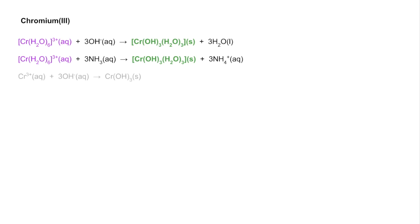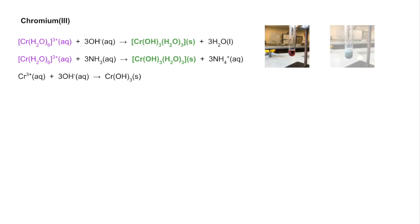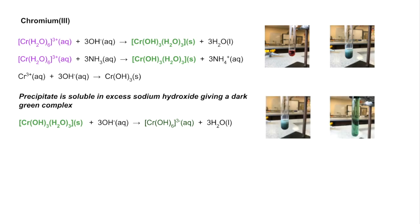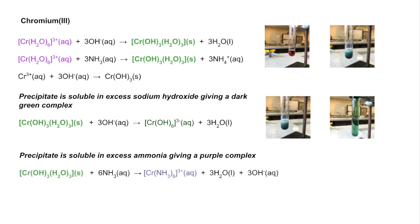Finally, for chromium 3+: the precipitation reaction gives a green or grey-green precipitate, starting from a violet solution. The precipitate is soluble in excess sodium hydroxide, giving a dark green complex, and also soluble in excess ammonia, giving a purple complex. The equations and photos show the transition from the green precipitate to the green solution with sodium hydroxide, and then the purple complex with excess ammonia.